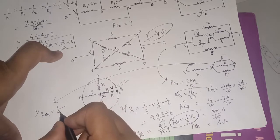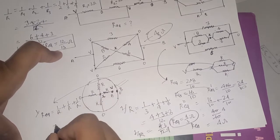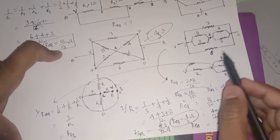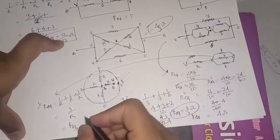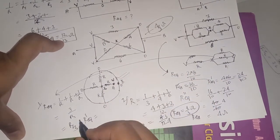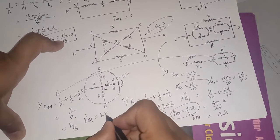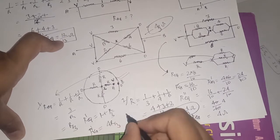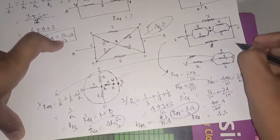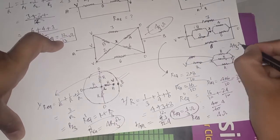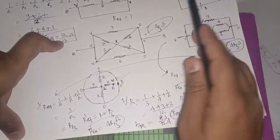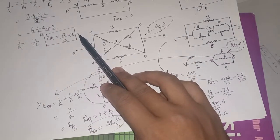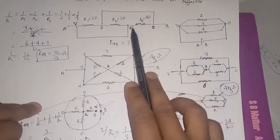So 1 upon R is equal to 1 upon R1 plus 1 upon R2 plus 1 upon R3. Here it becomes 1/R plus 1/R plus 1/R = 3/R, that is R by 3. Now this R by 3 is in series with R, so R prime equivalent is R plus R by 3, which is 3R plus R = 4R by 3. So R equivalent is 4R by 3. This question's solution is 4R by 3; the second was 4 by 3 ohm; and the first was 12 by 13 ohm.